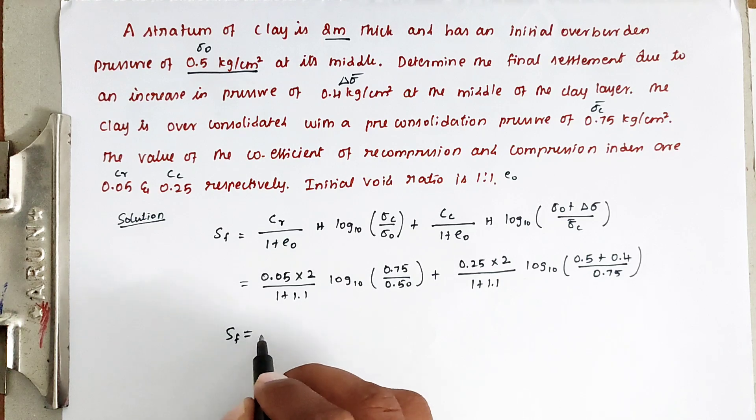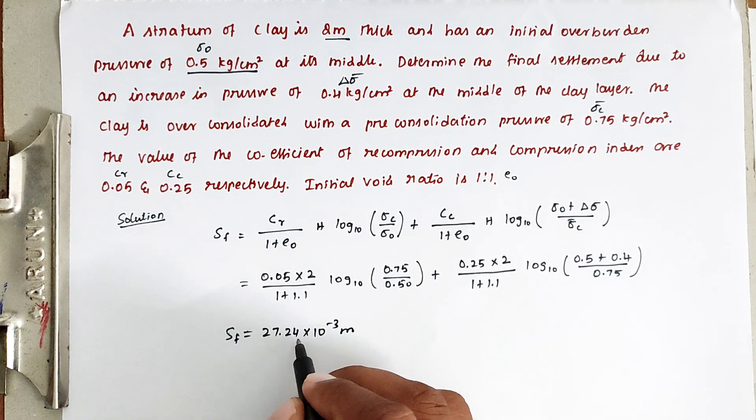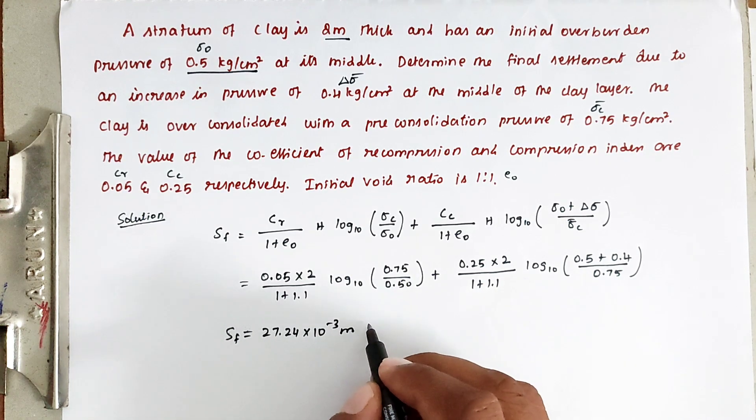Solving this, we got the value of Sf equal to 27.24 times 10 power minus 3 meters.